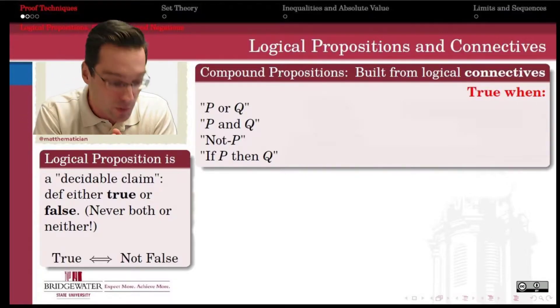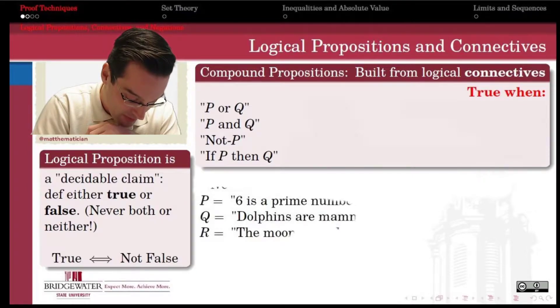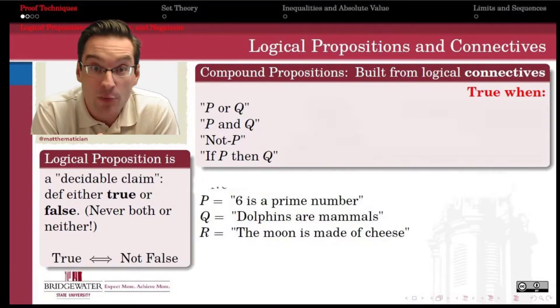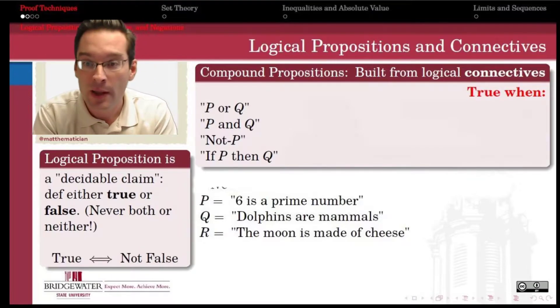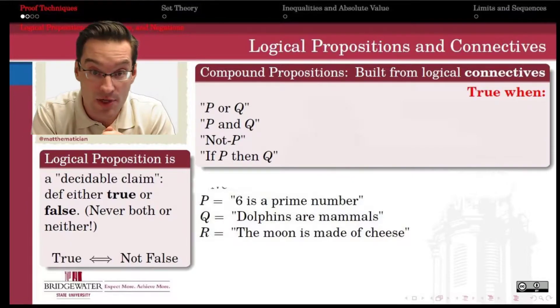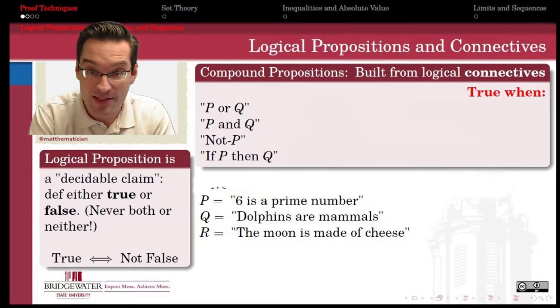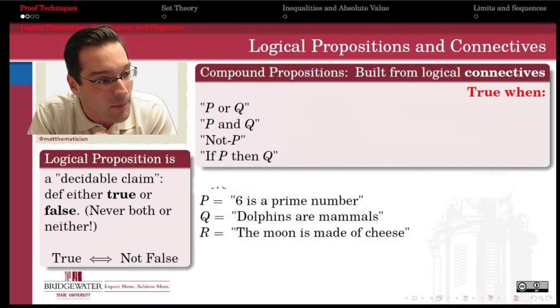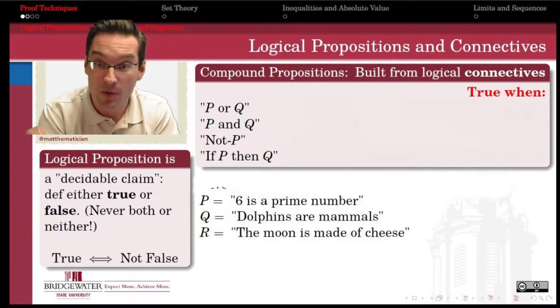Once I have a logical proposition, let me pick an example. Let's put three of them up here on the board. Consider the statement P, which is 6 is a prime number. That's a logical proposition because either that statement is definitely true or it's definitely false. There's no in between. It's not kind of true, and it can't be none of the above. Same thing with the statement dolphins are mammals, which we're calling Q, and the statement the moon is made of cheese, we call that R. Here are three examples of logical propositions. Now, you might already be thinking as a math major, well, these aren't all true. No, they're not all true. But that doesn't preclude them from being propositions. A proposition can be a false statement, but it has to be a statement that is definitely one or the other.